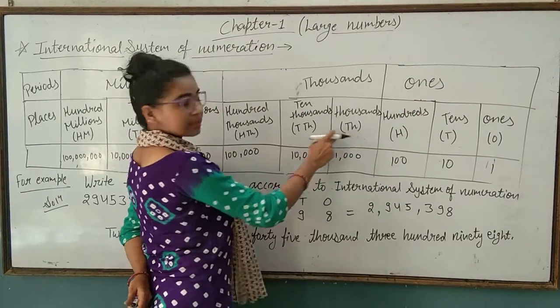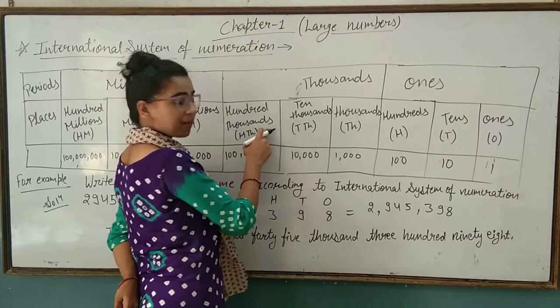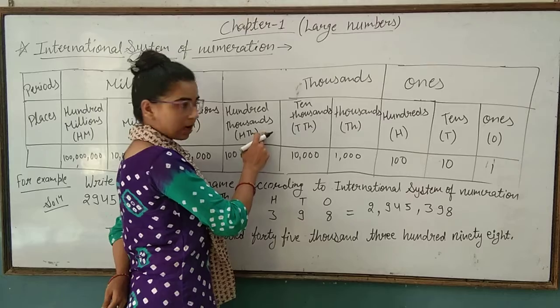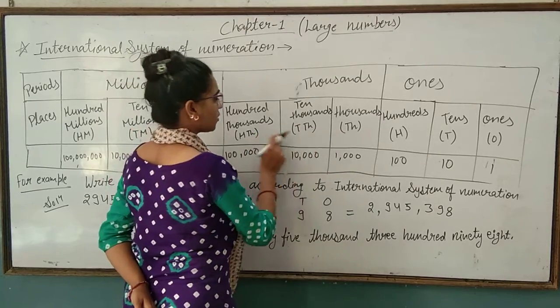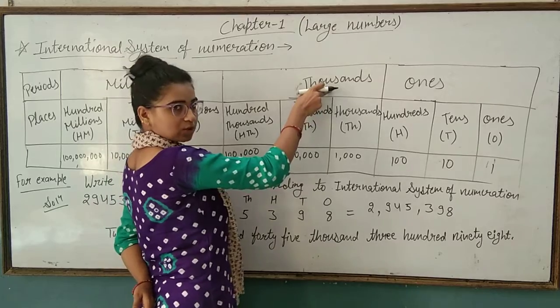Then thousands: thousand, ten thousand, and hundred thousand. Here we have 100,000. These three together make our thousands period.